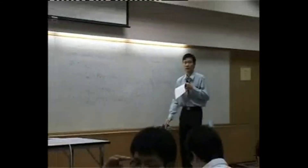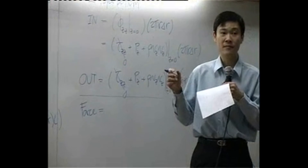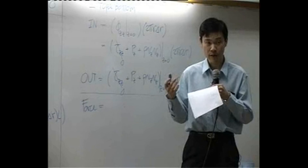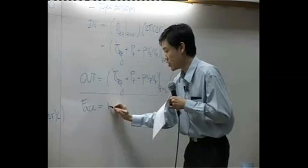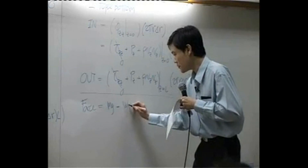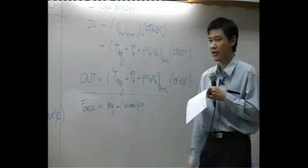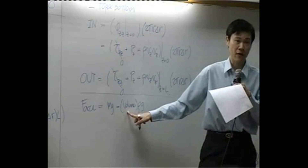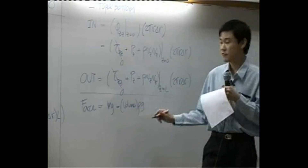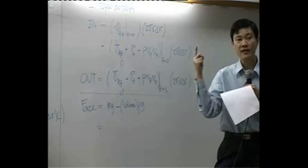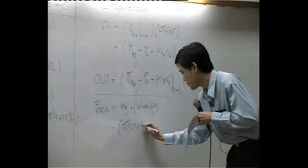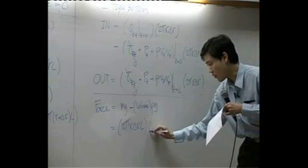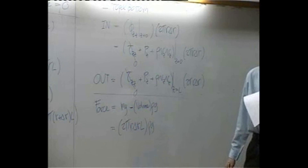The last term is the force — specifically the weight of the fluid within the shell, which is mg. This equals volume multiplied by density multiplied by g. The volume of the shell is the ring area on top multiplied by L, giving: (2πr·Δr)·L·ρ·g.